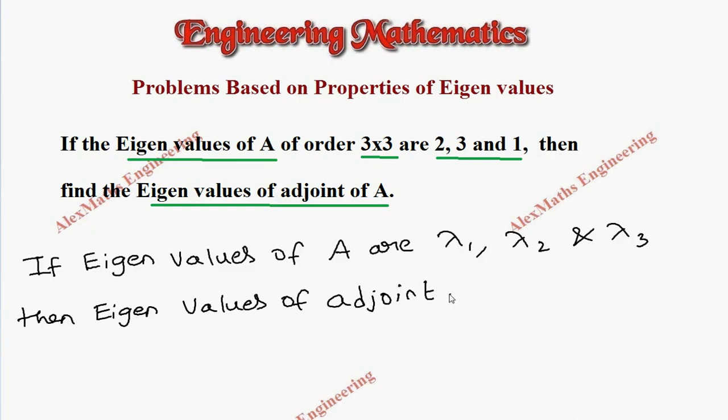By property, we have determinant A into 1 by lambda 1, determinant A into 1 by lambda 2 and determinant A into 1 by lambda 3. So, we take the reciprocal and we multiply with the determinant value.